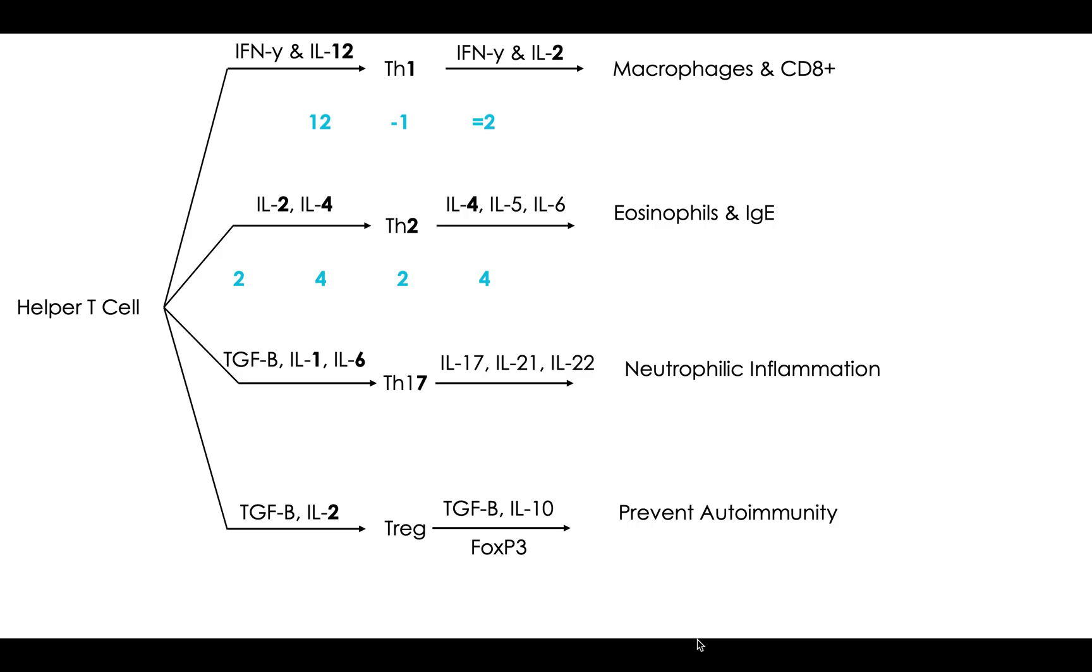And so you have the Th2 mediated response giving off IL-4, 5, and 6. So if you can just remember 4, then you can remember that it's 4-5-6, just right in an order. And if we remember from the interleukins video what all of these do. So IL-4, you get on the floor, so get is for IgG and IgE. And then IL-6 is an acute phase reactant because 6-year-olds are acute. So all of this is supposed to help you remember that these are involved in IgE and eosinophil mediated responses.